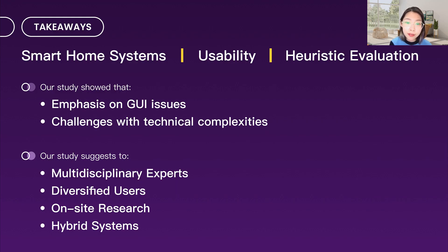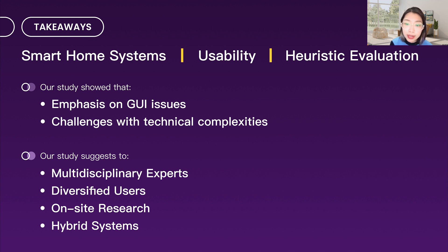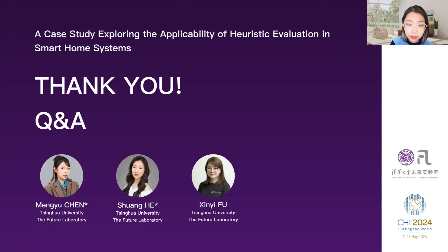Our study used heuristic evaluation to identify usability issues in smart home systems and discussed the applicability of this method. It shows it's effective at identifying GUI issues but limited in addressing technical complexities. We suggest involving experts from diverse backgrounds and considering real end-user needs to enhance effectiveness. By conducting heuristic evaluation in actual living spaces, usability issues can be better understood and addressed, ultimately improving the overall user experience. Thanks for listening — if you have any questions, please let me know.